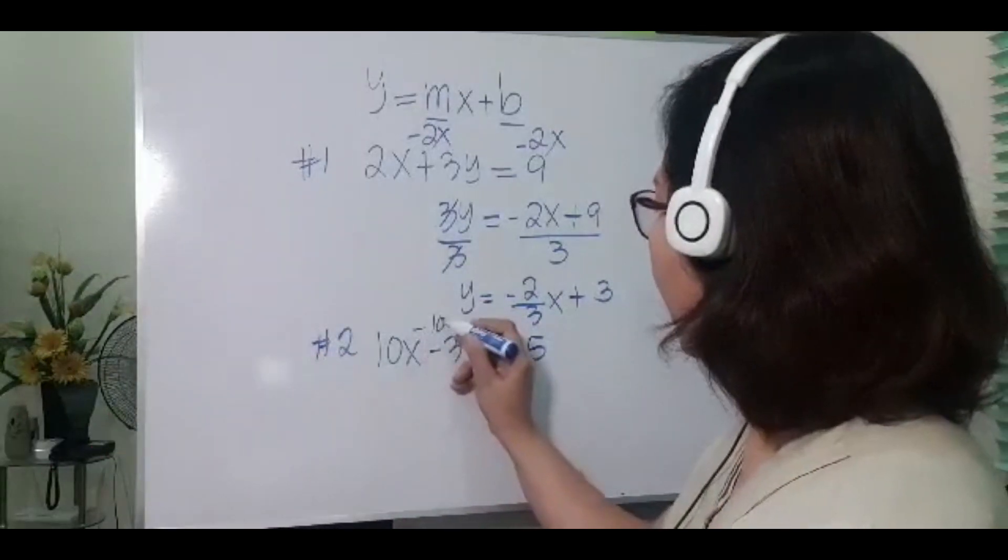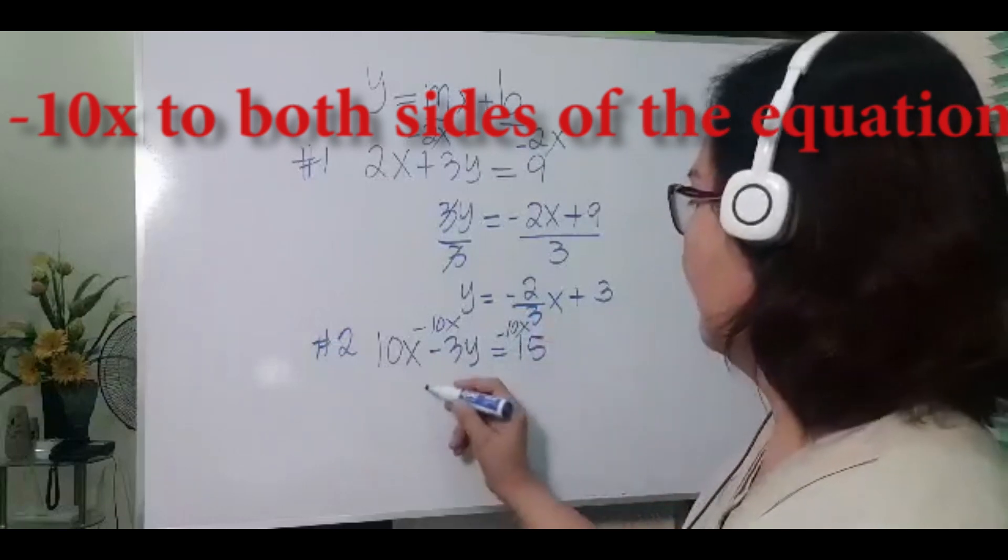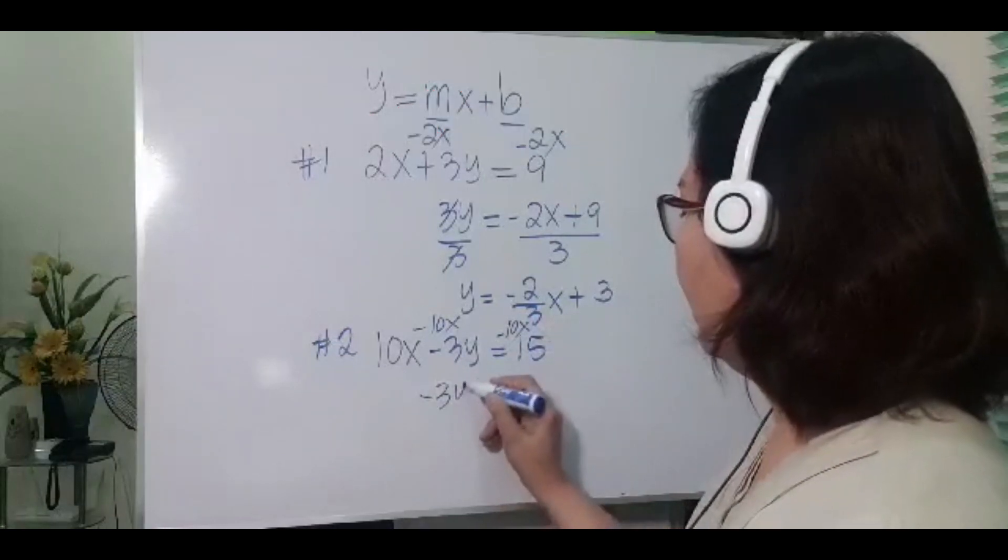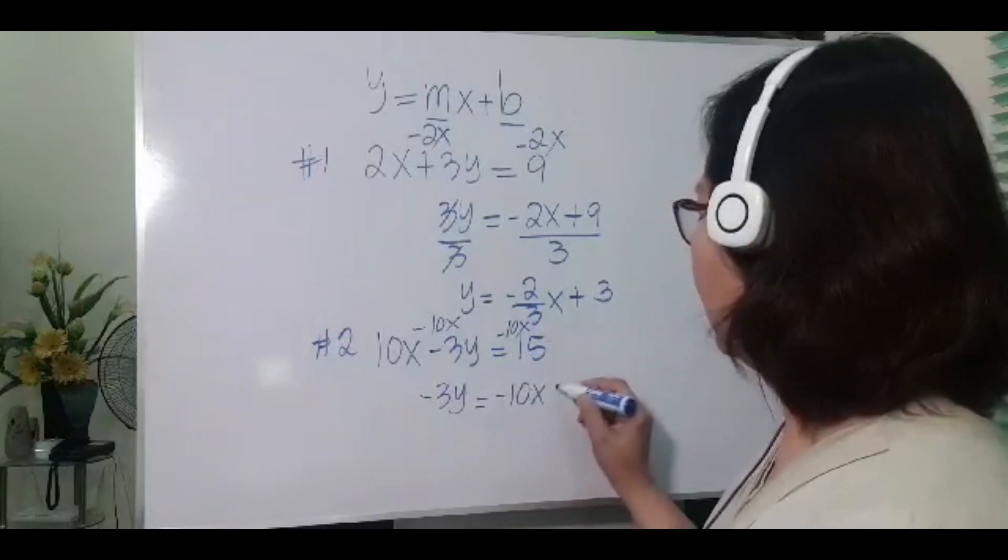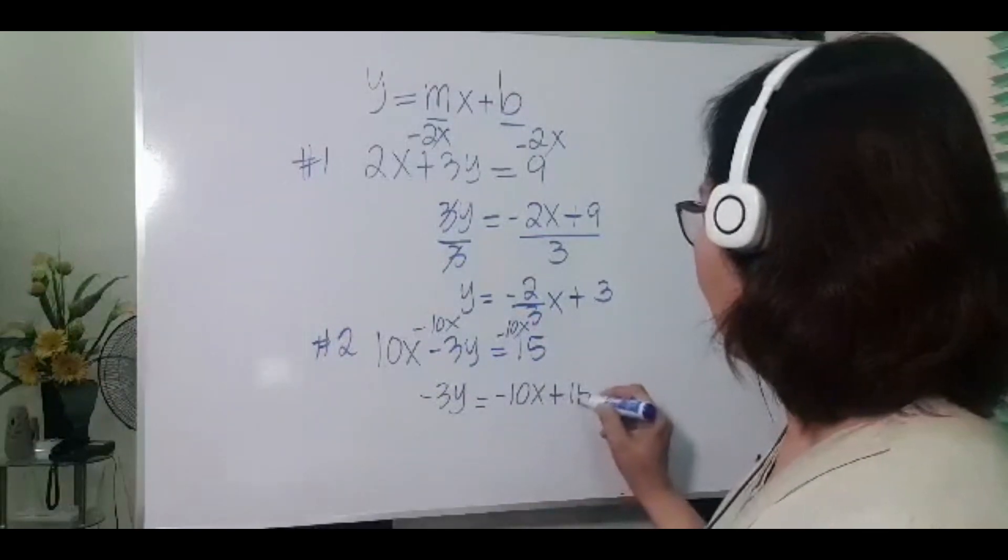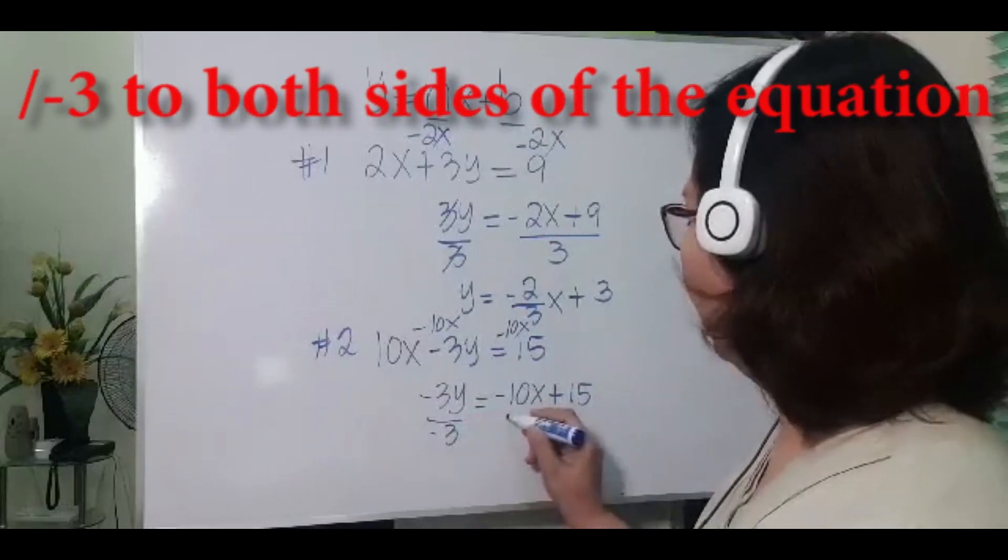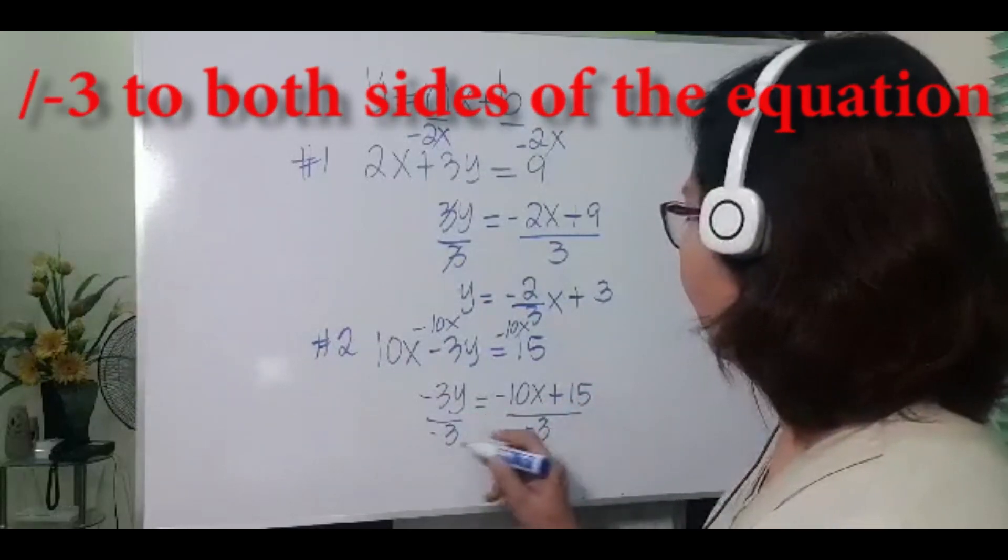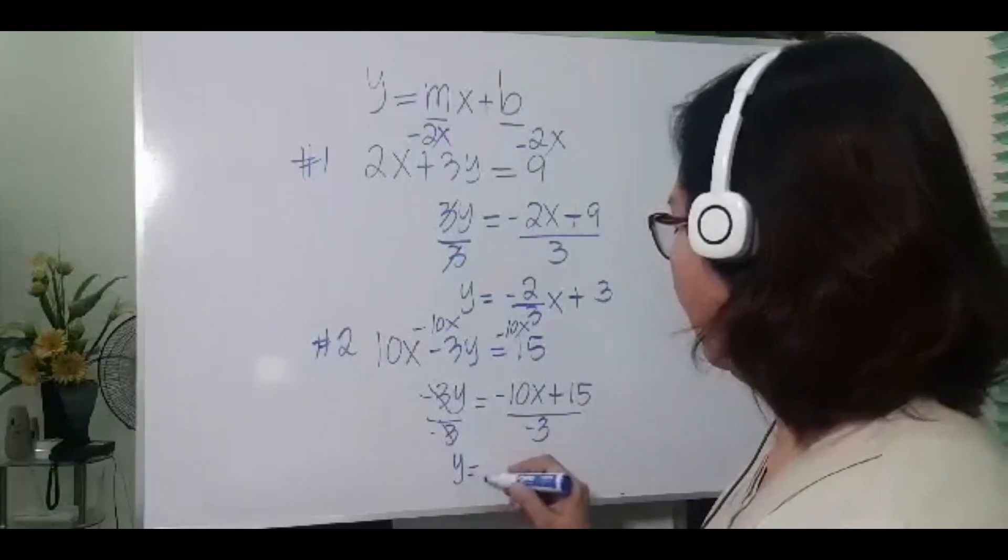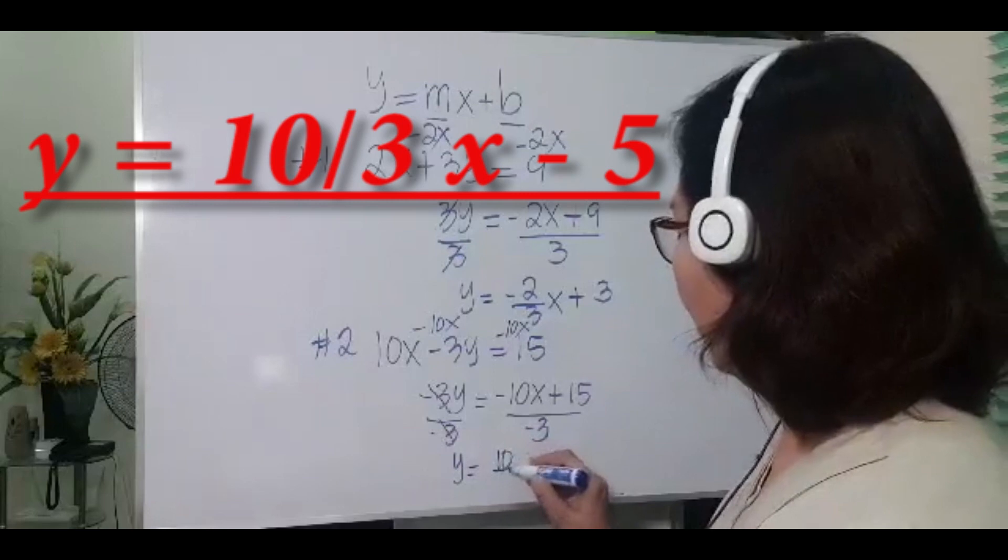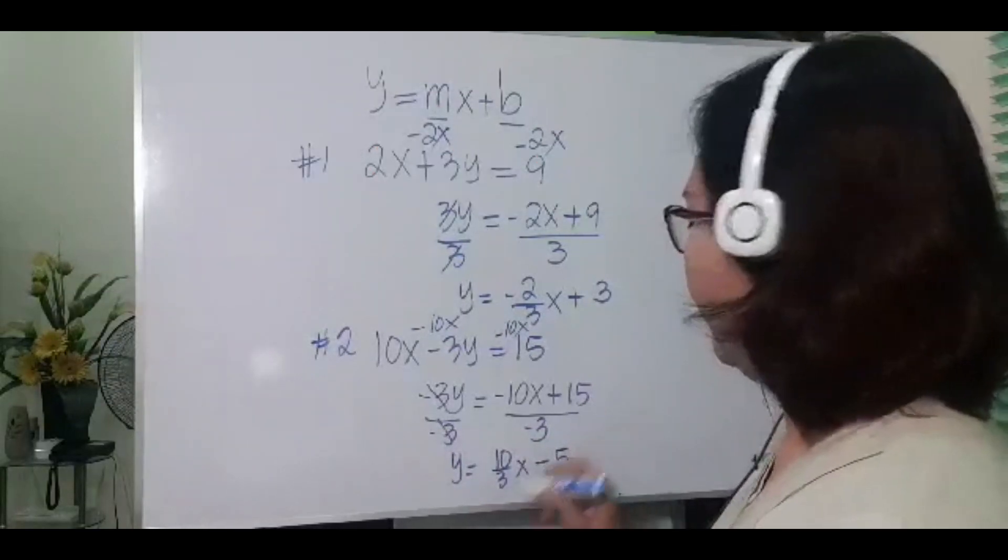minus 10x from both sides. Negative 3y equals negative 10x plus 15. Divide by negative 3: y equals 10 over 3x minus 5.